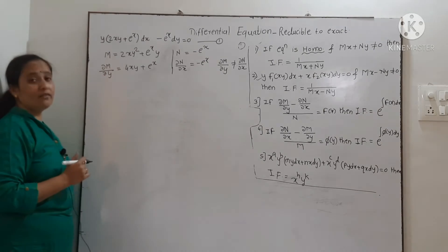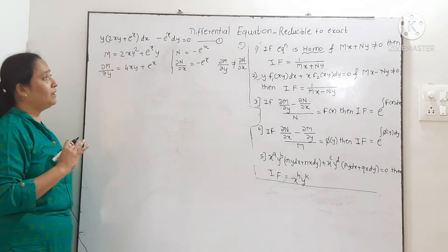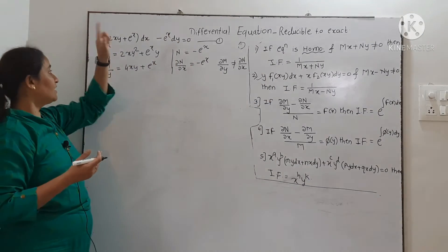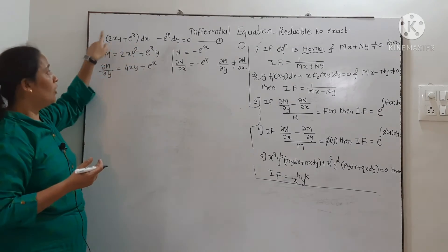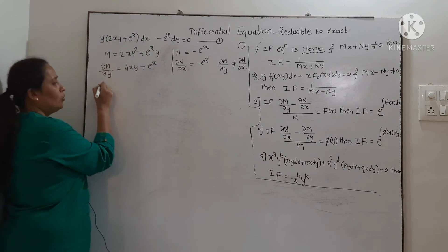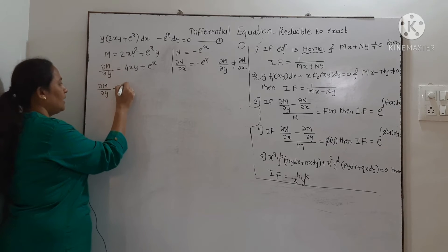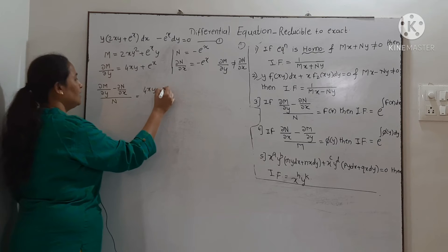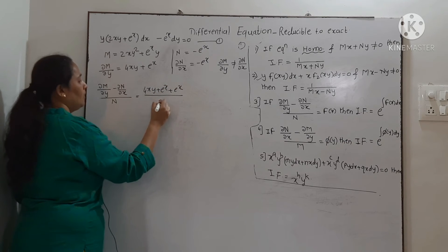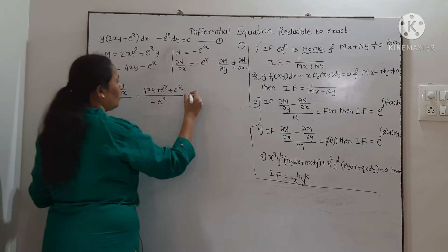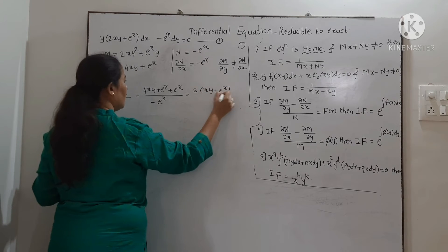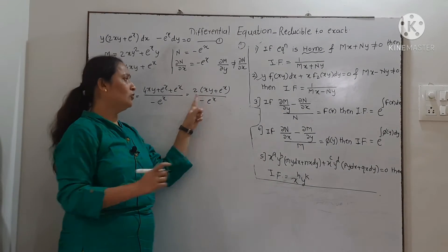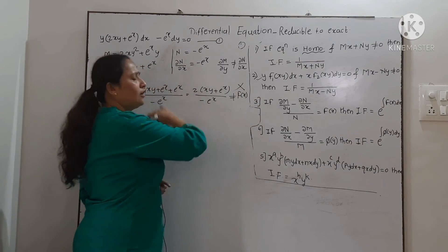Checking which rule is applicable: is it homogeneous? No — first rule not applicable. Can we apply the second rule? It should be y into function of x,y everywhere, but there is only eˣ, so the second rule is not applicable. Checking the third rule: (∂M/∂y − ∂N/∂x) / N = (4xy + eˣ + eˣ) / (−eˣ) = 2(xy + eˣ) / (−eˣ). We cannot cancel y from this, so it is not a function of x only — the third rule is not applicable.